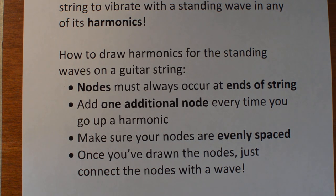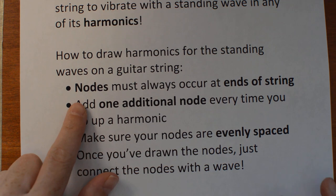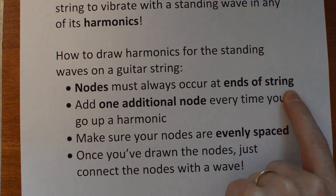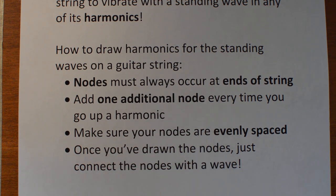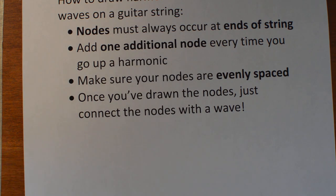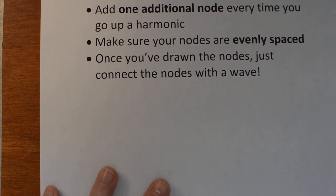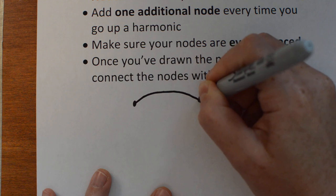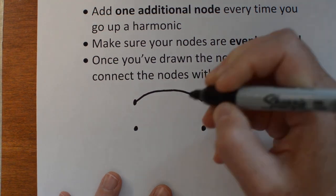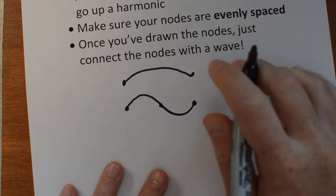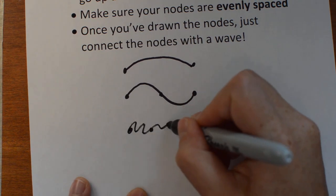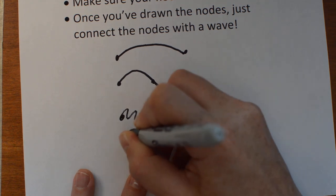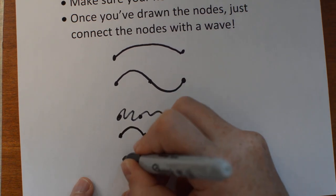In class we'll actually listen to the harmonics and see what they look like. Here's how to draw them: nodes always happen at the ends of strings since the string is tied down. Every time you go up in a harmonic, you add one extra node. Your nodes have to be evenly spaced — the first extra node will be in the middle of the string, and then we'll add nodes like two-thirds of the way through. Once you've drawn every node, you connect the dots with a wave. Here's the first harmonic — just a wave like this. The second harmonic: add another node, then make your wave. The third harmonic: keep your nodes at the ends and add two nodes in the middle, then connect them with a wave.